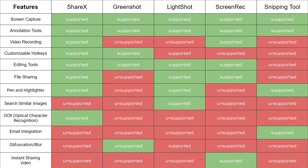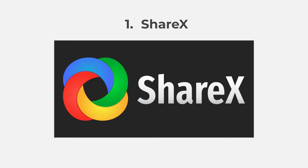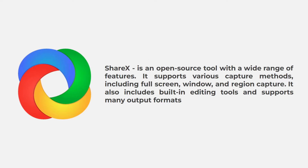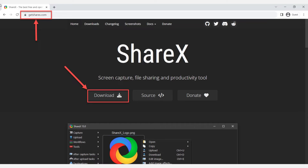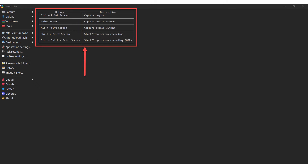The first screen recording tool you can use for free is ShareX. ShareX is an open-source tool with a wide range of features. It supports various capture methods including full screen, window, and region capture. It also includes built-in editing tools and supports many output formats. To download and install ShareX on your device, visit getsharex.com. On the website, locate the download option, and after downloading, follow the on-screen instructions to complete the installation. Once the installation is complete, you can launch the tool.